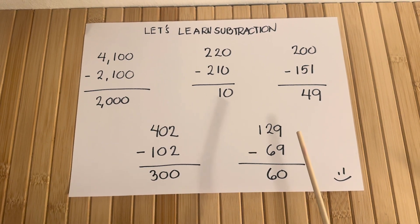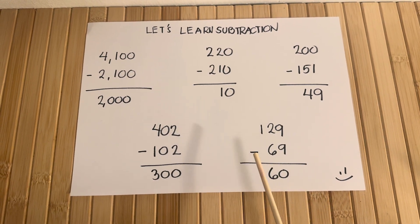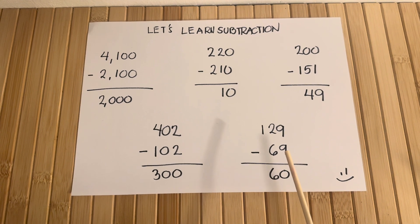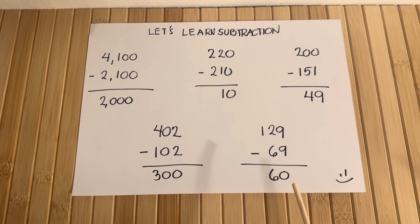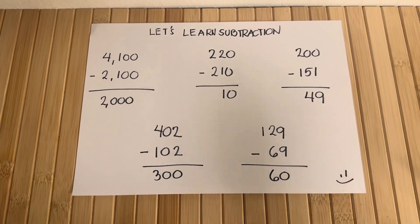Lastly, one hundred twenty-nine minus sixty-nine is equals to sixty.